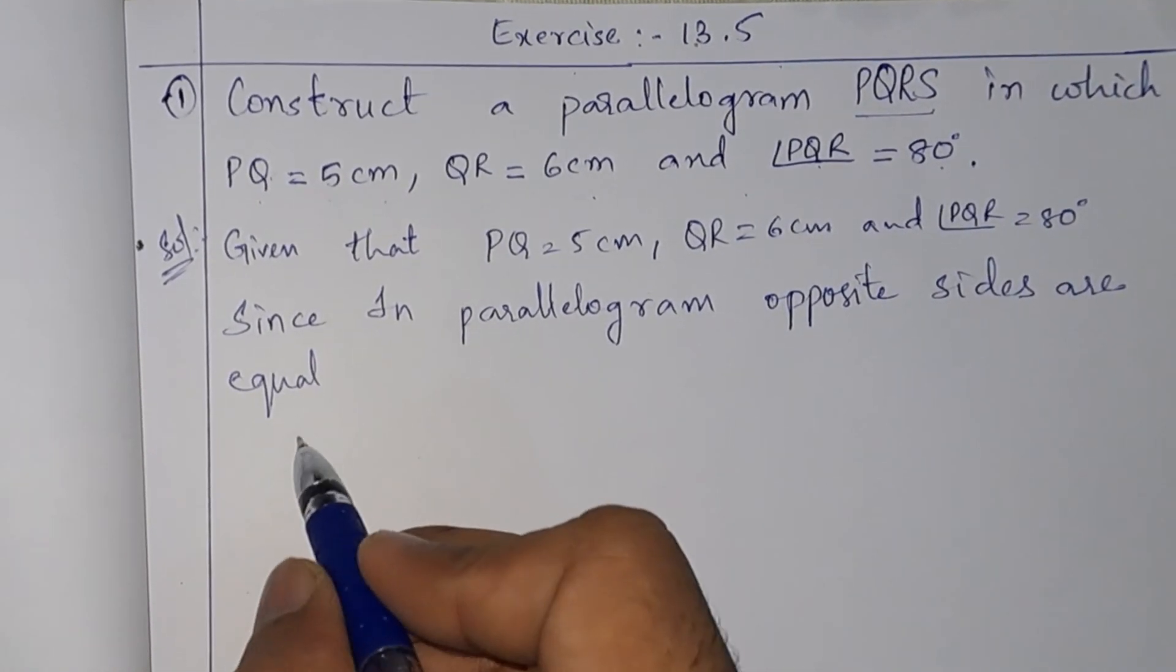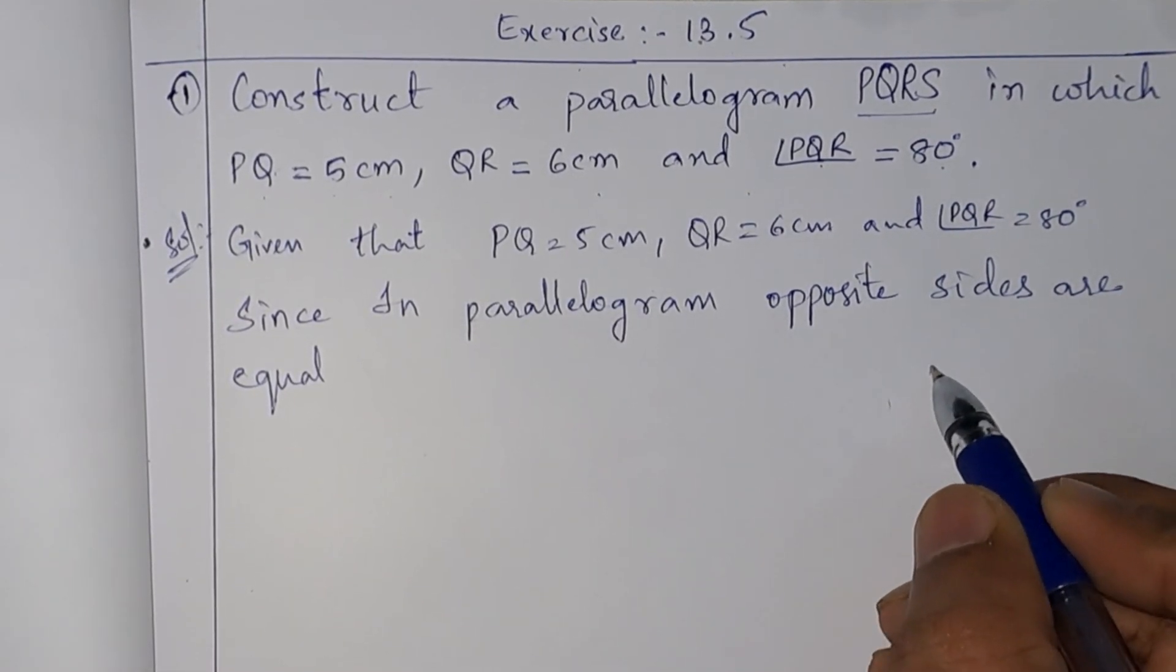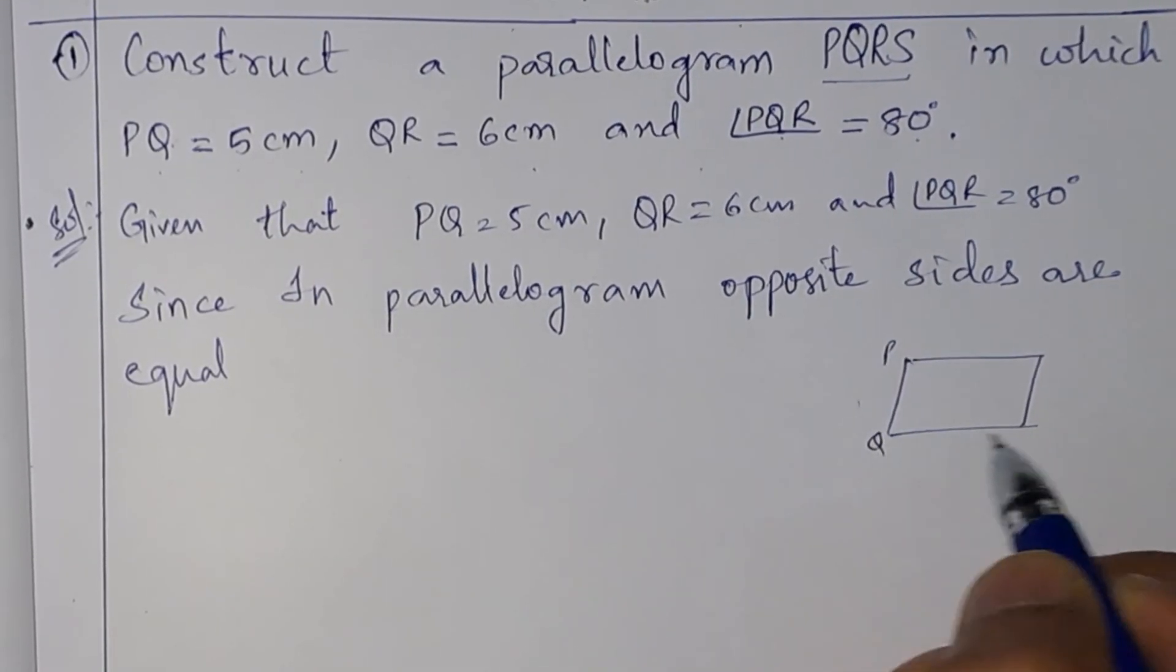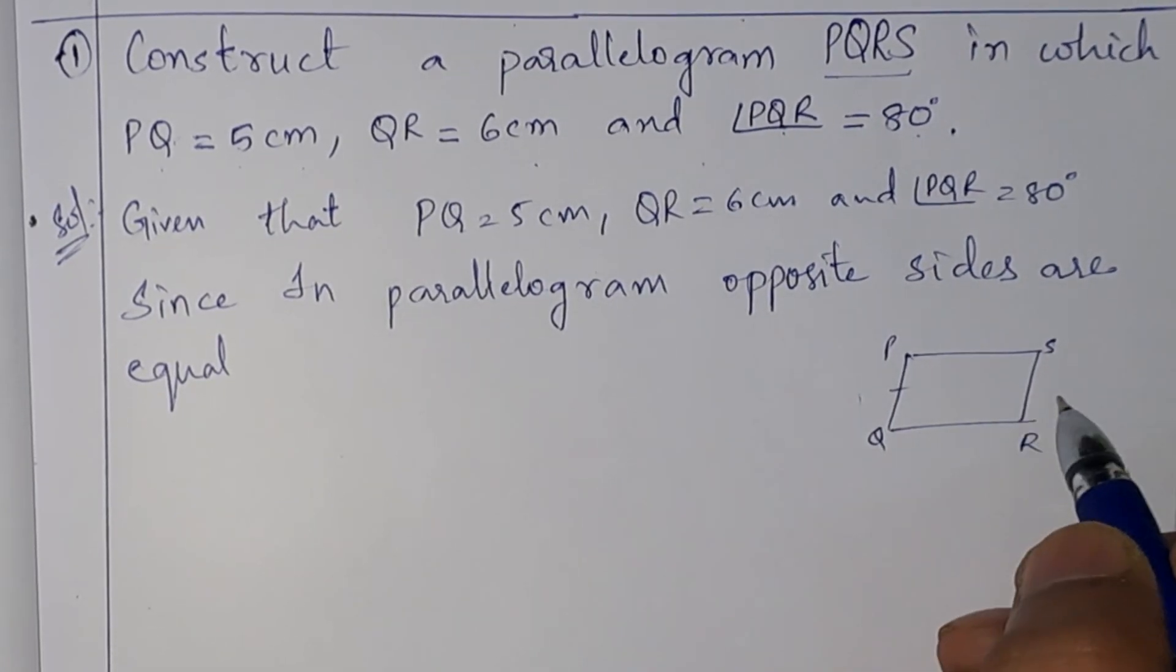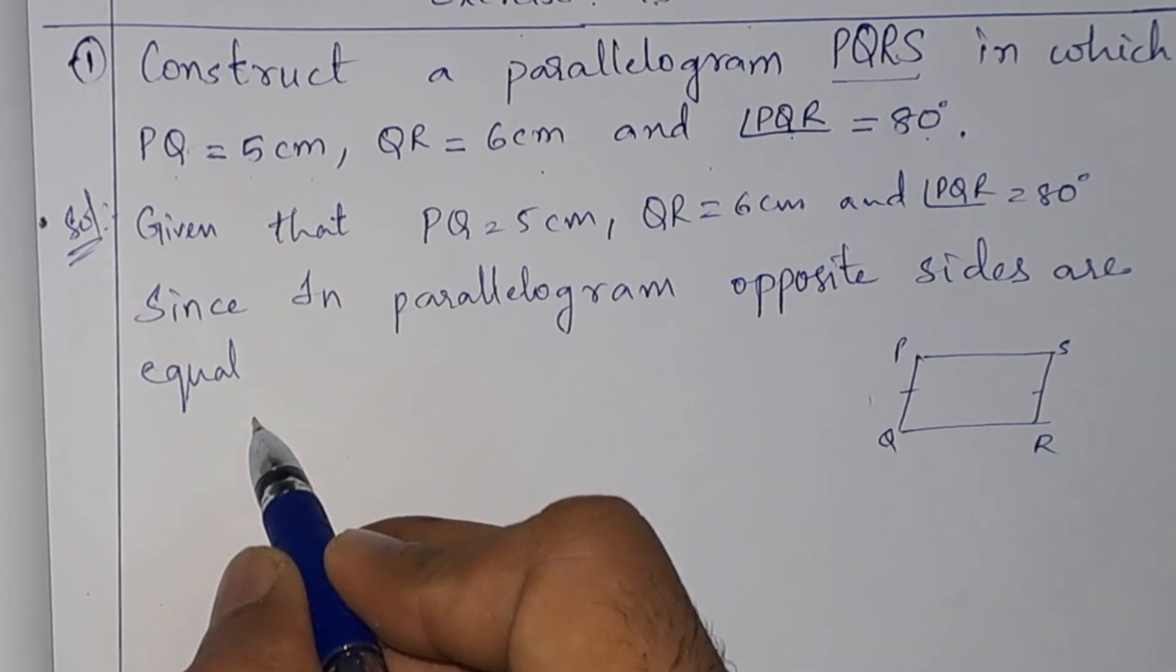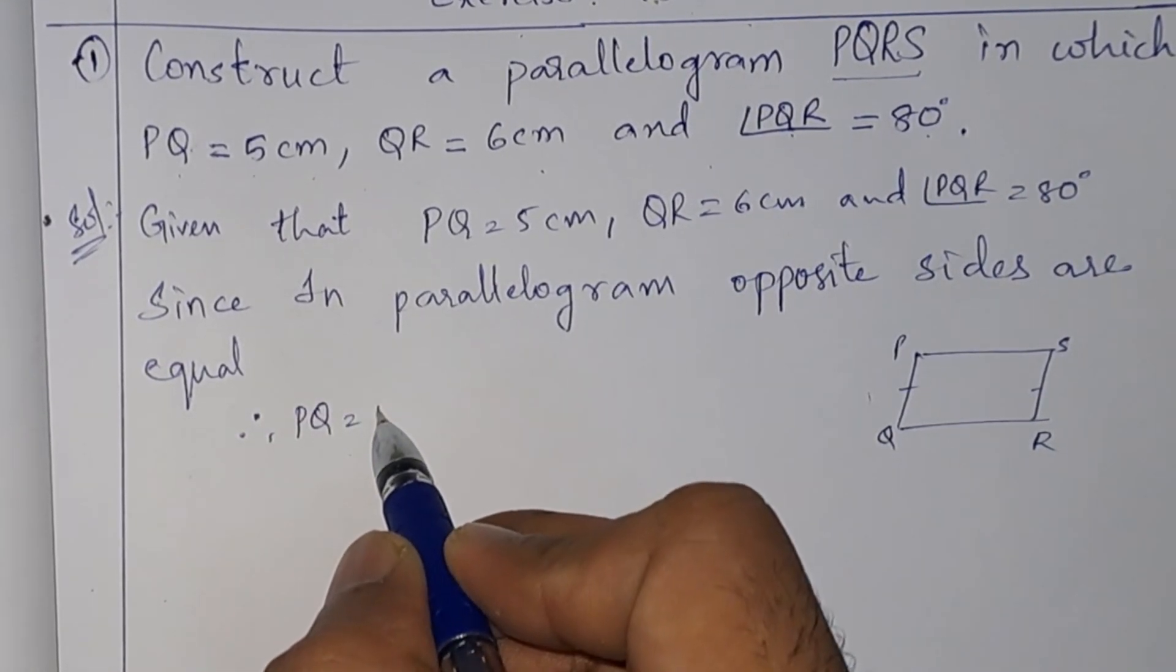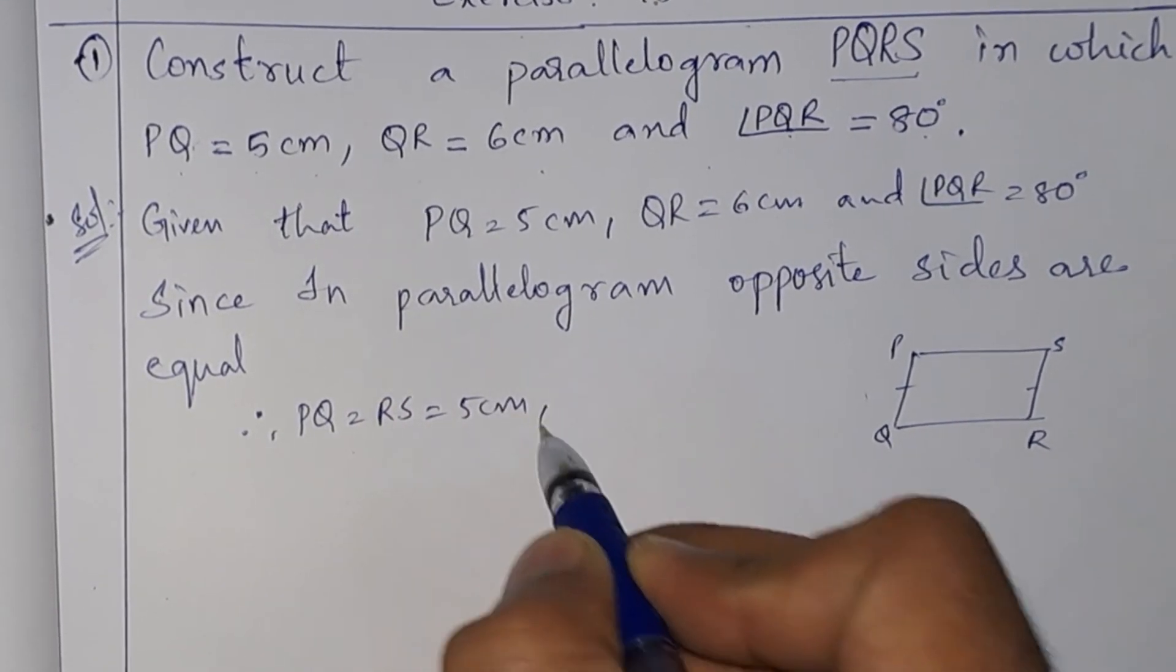We can draw roughly—suppose this is a parallelogram PQRS. So this PQ equals RS. Therefore, PQ equals RS equals 5 centimeters.